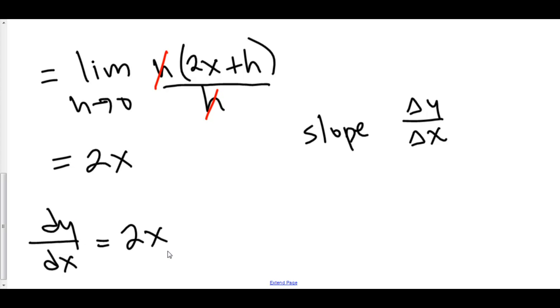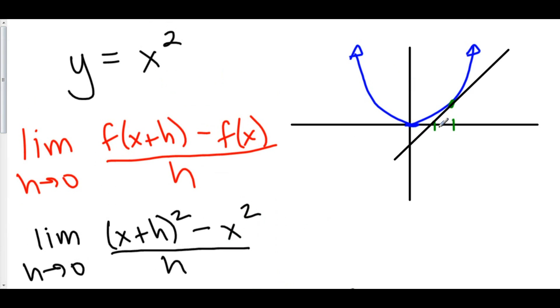dy over dx equals 2x. What this means is that if you find dy over dx at any point x. For example, let's find dy over dx at x equals 2. Because that was the problem from the very beginning. We want to find the slope of the tangent line at x equals 2.